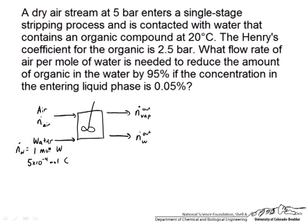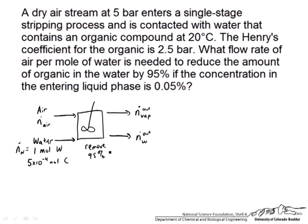We are assuming 1 mole of water as our basis and we need to determine N_dot_air. We know that for each mole of water we have 5 times 10 to the minus 4 moles of contaminant, which I will call C. Some of that contaminant will exit in the vapor stream — we are given a Henry's law constant for that — and some will exit still in the liquid stream. But we are told that we are going to remove 95% of the contaminant from the liquid stream. So 5% remains in the liquid stream.